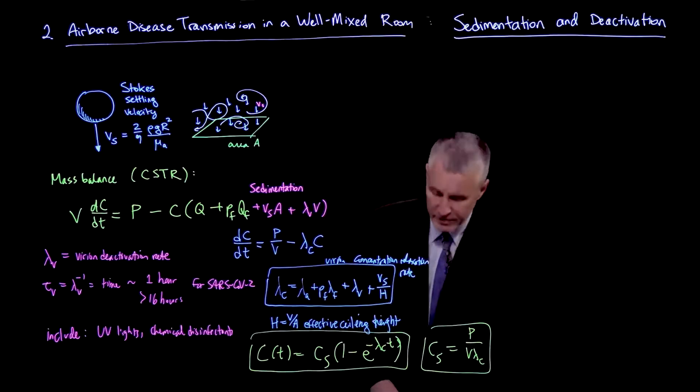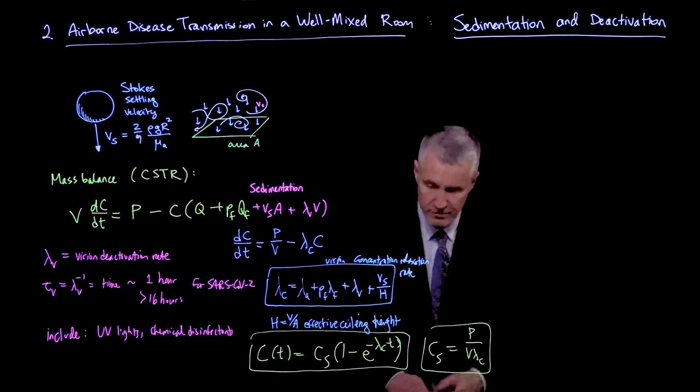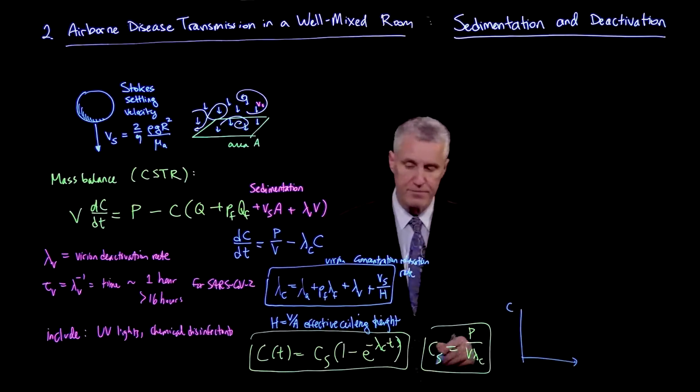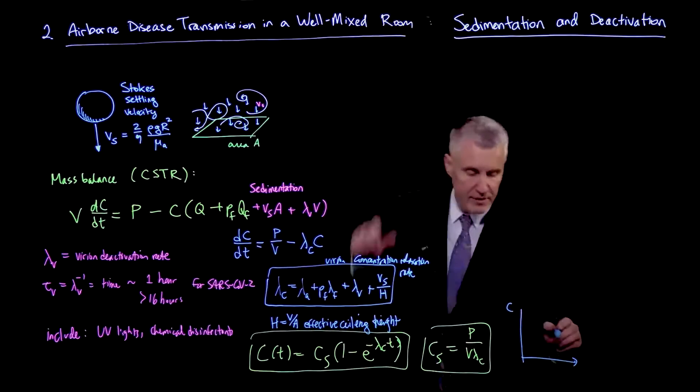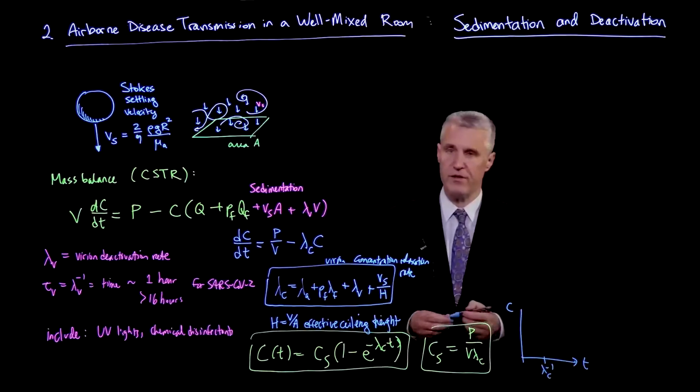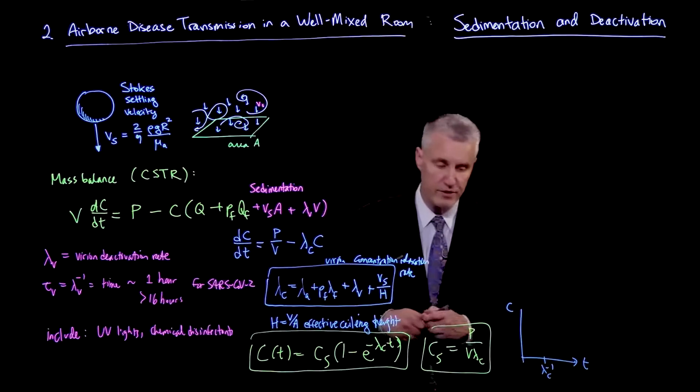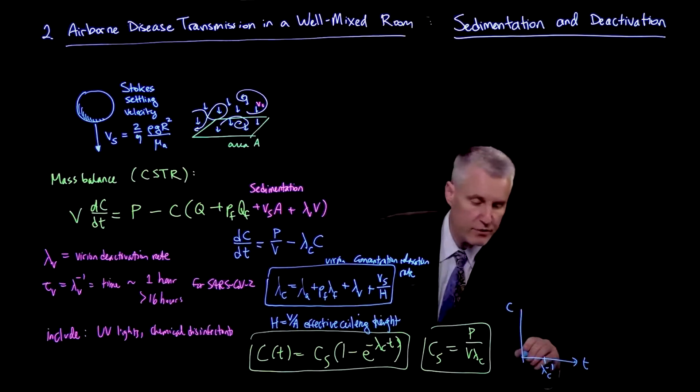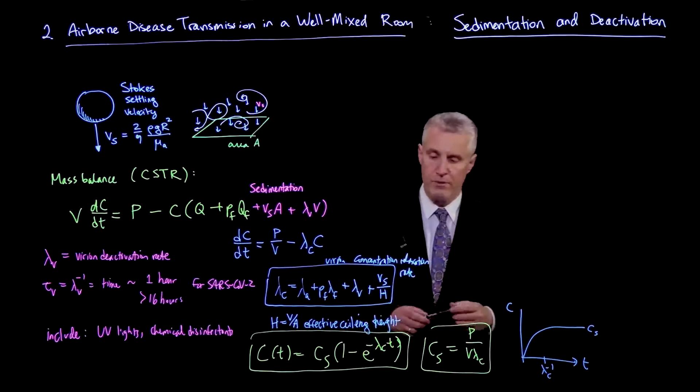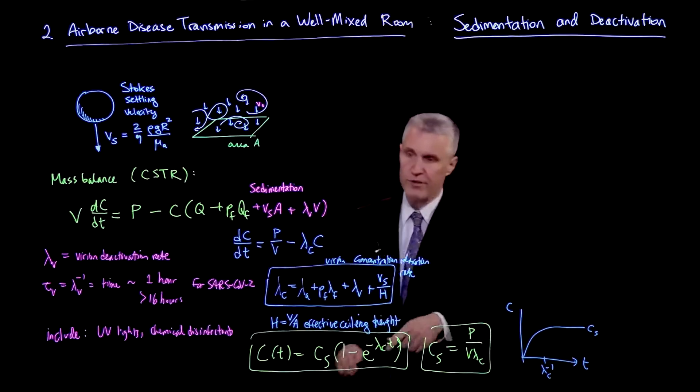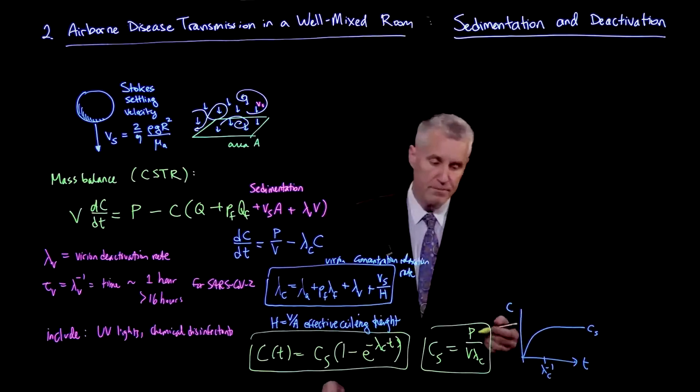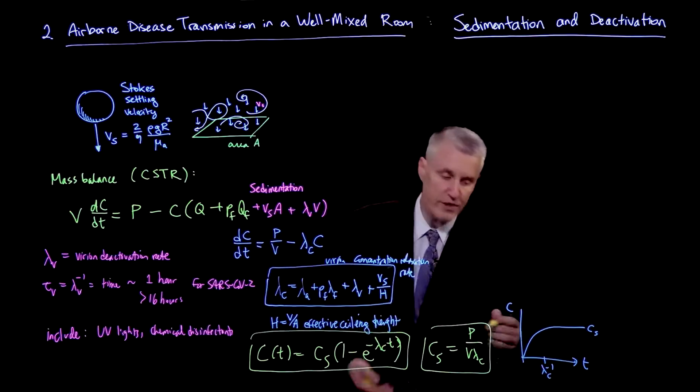Also, if the lambda rates are high, then the relaxation is very fast. So you very quickly get to the final value. And so that's actually worth sketching what that looks like. If I plot the concentration C as a function of time, we have lambda_C inverse is the overall concentration relaxation time. So it looks like an exponential relaxation to a value Cs.